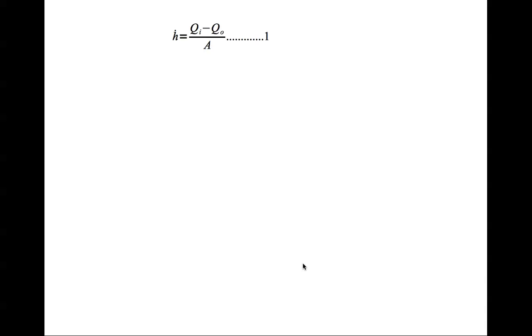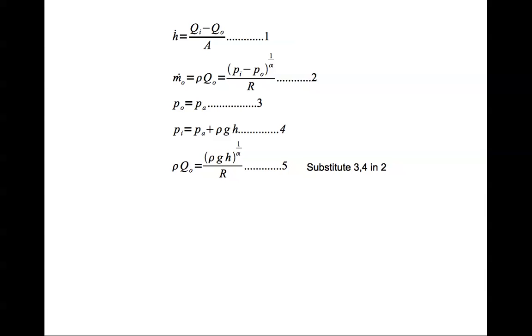Now let's look at all these equations. There you have the dynamics of the height. First equation. Second equation is the mass outflow rate equation. Outside pressure P0 equal to P atmospheric. The inside pressure PI equal to PA plus rho GH. Substituting 3 and 4 in 2, we can write an equation for Q0 as rho Q0 equal to rho GH to the power of 1 by alpha divided by R.